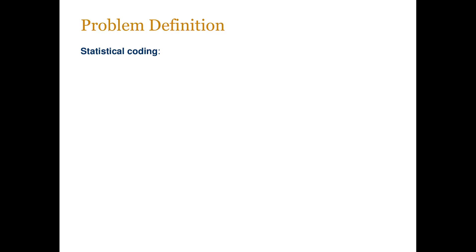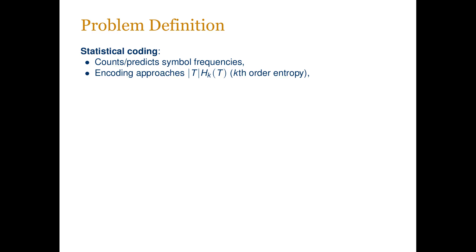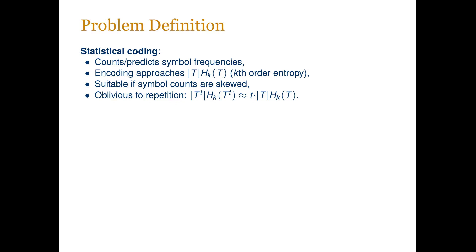To define the problem tackled in our paper, let us take a closer look at the three main compression algorithms. Statistical compression is based on encoding symbols using a varying number of bits based on computed or predicted symbol frequencies. In the limit, these methods approach the k-th order entropy of the text, making them well suited for inputs with very skewed symbol frequencies. The drawback, however, is that the entropy is not sensitive to repetition: if we concatenate t copies of a text, the output size of a statistical compressor essentially grows by a factor of t.